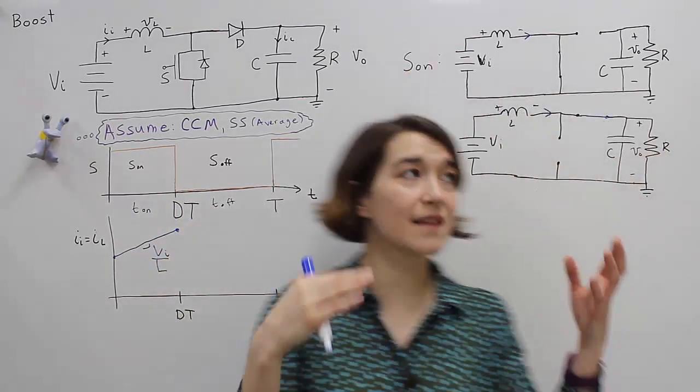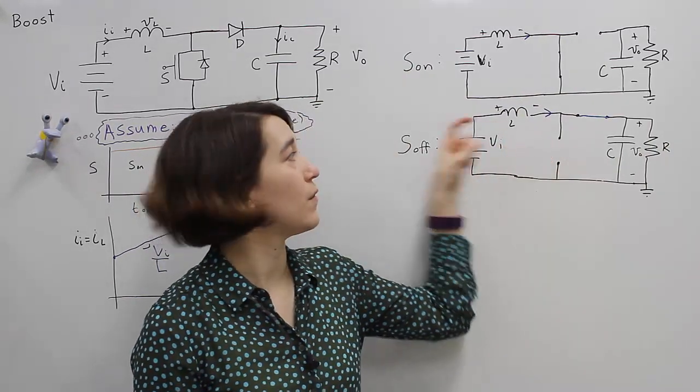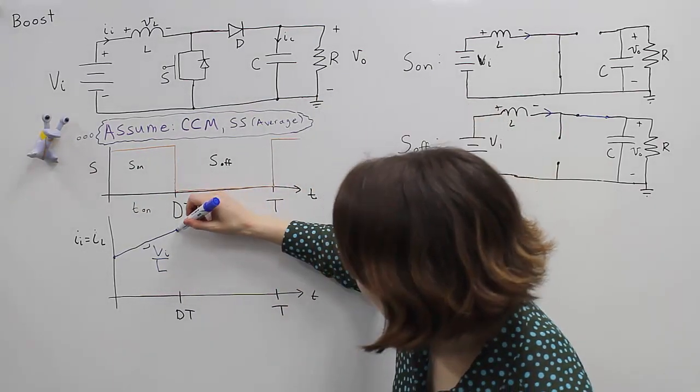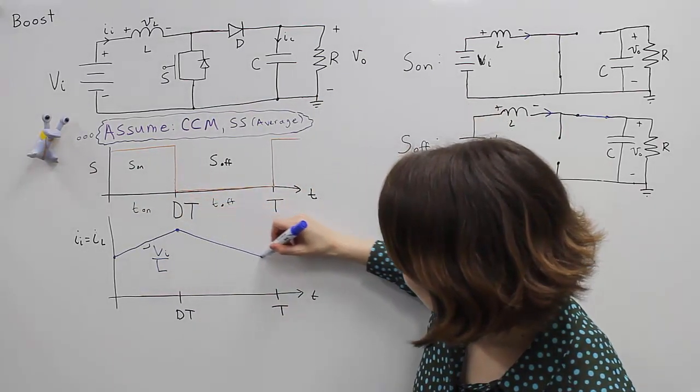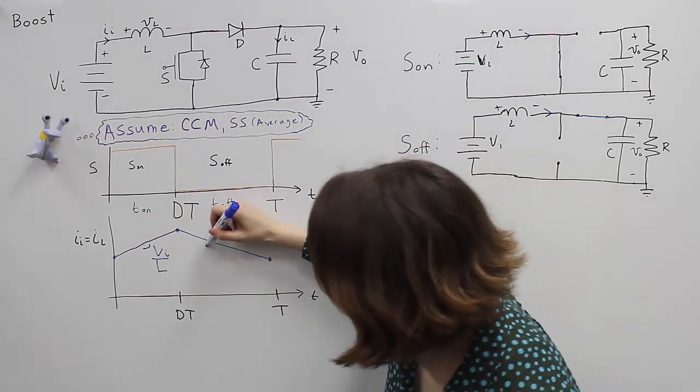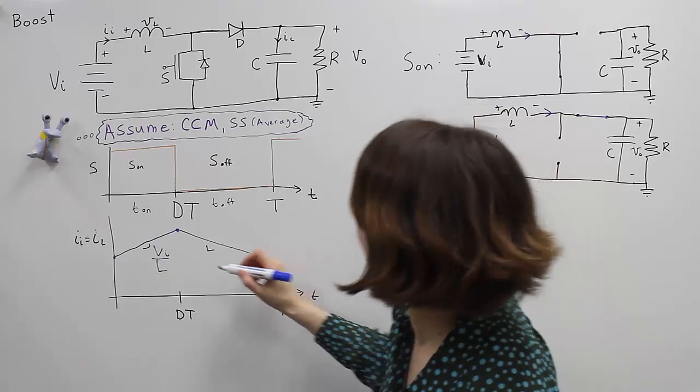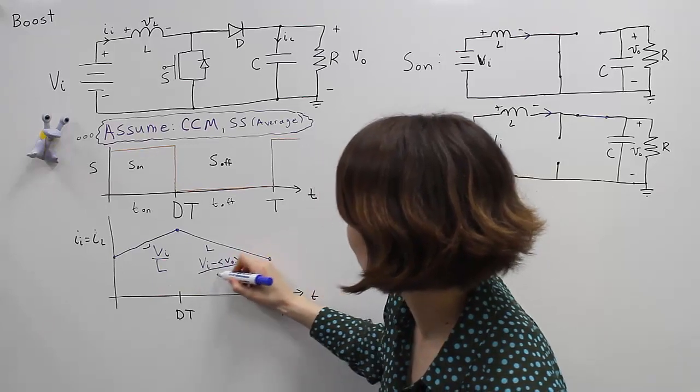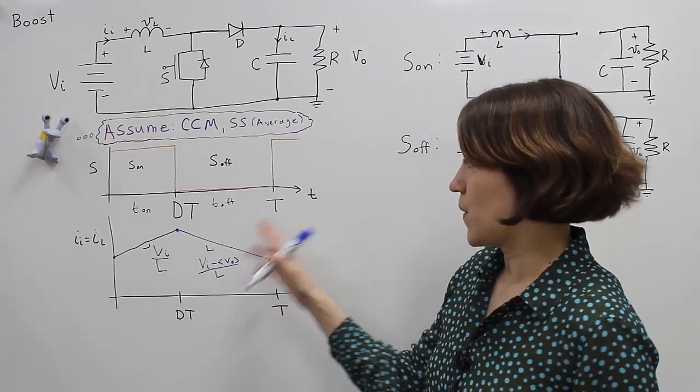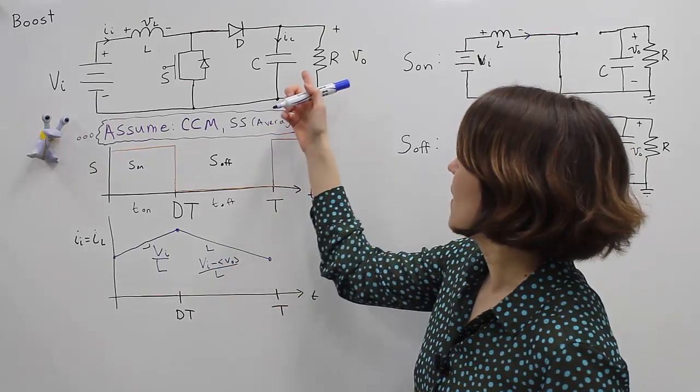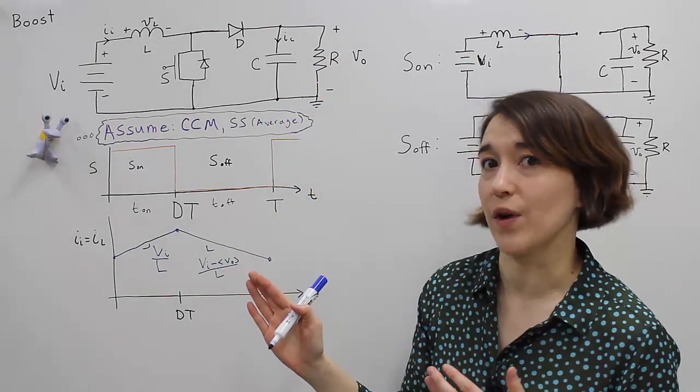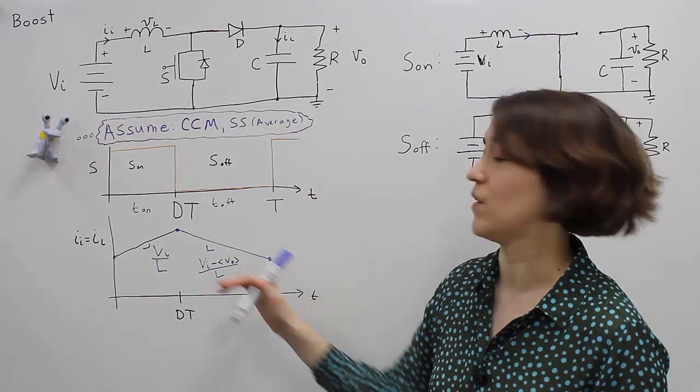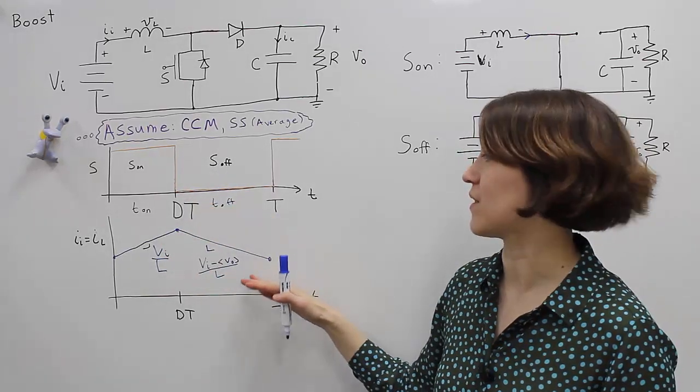And then when we switch to our second state here, the voltage over the inductor is going to be V in minus the average value of V out. So let's write that here. And that's actually going to be decreasing. So it's going to be V in minus the average of V out all over L. So to ensure that this is actually decreasing, the output voltage is going to be higher than the input voltage, because it's boosting up. So if you look at this equation, V in minus a larger value is going to be negative. So we can ensure that it's actually going to be decreasing here.